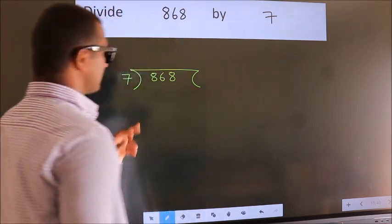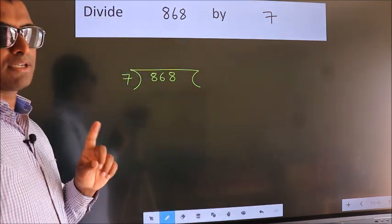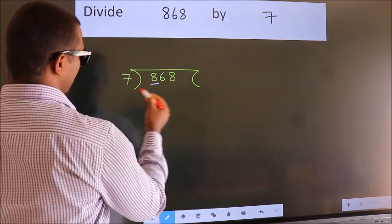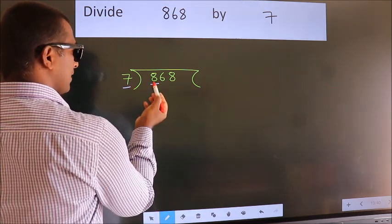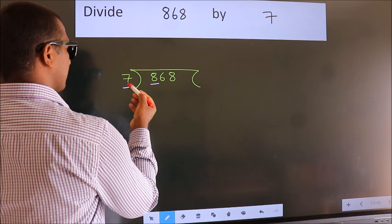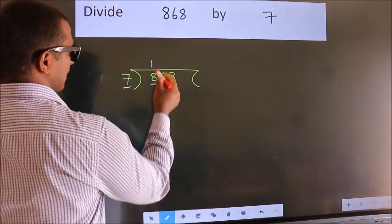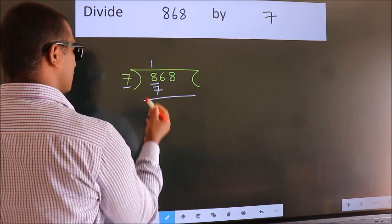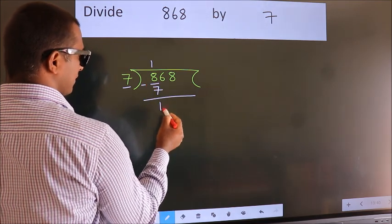This is your step 1. Next. Here we have 8, here 7. A number close to 8 in the 7 table is 7 once is 7. Now we should subtract. We get 1.